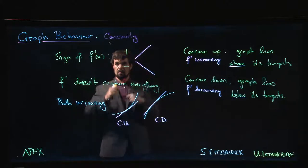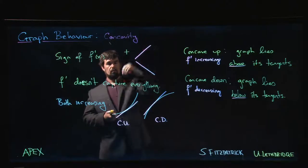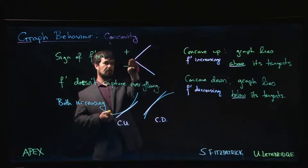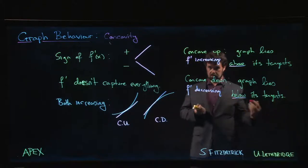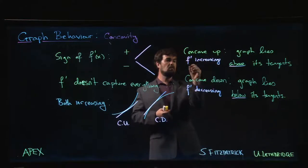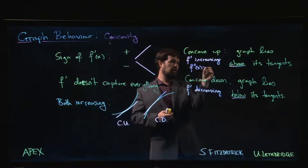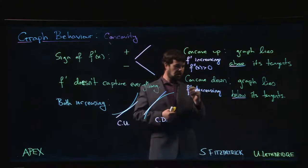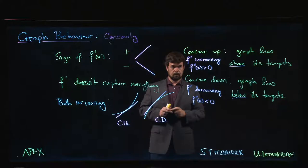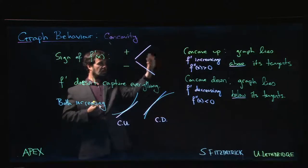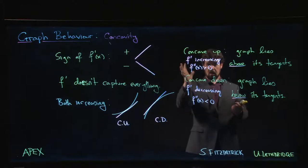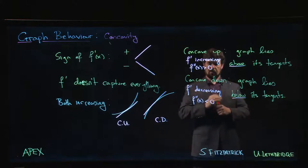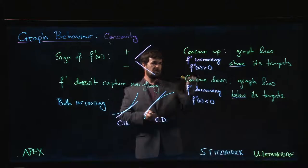We know that if a function is increasing, its derivative is positive, and if decreasing, its derivative is negative. The function we're interested in here is already a derivative — the first derivative — so the derivative of the first derivative is the second derivative. Saying f prime is increasing is the same as saying f double prime is positive. F prime decreasing means f double prime is negative. So concave up corresponds to positive second derivative, concave down to negative second derivative.